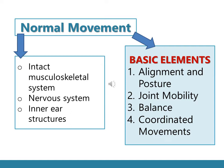According to the book, normal movement is dependent on the functions of three parts of our body. First is an intact musculoskeletal system — the bones and muscles, which should be functioning. Second is the nervous system, referring to our brain and nerve endings. Third is the inner ear structures. When these three systems are functioning well, a person can attain normal body movement.